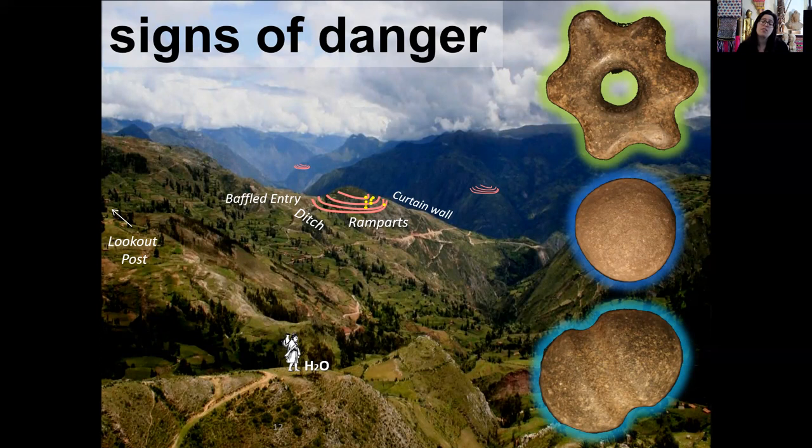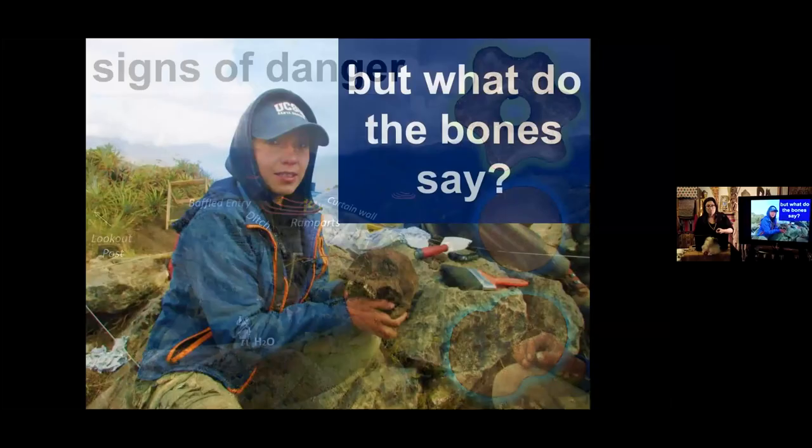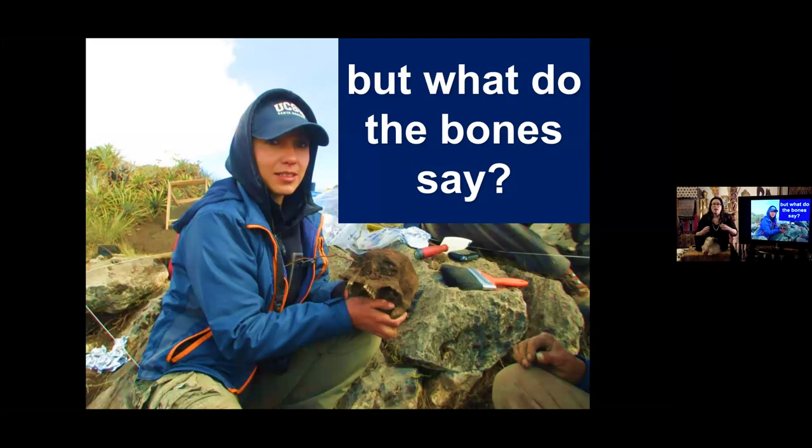We see people move from wide valleys up to mountain peaks — up to hill forts constructed with ramparts, ditches, curtain walls, and circular walls. There are weapons caches. These sites are aimed at defense. There are no water sources at these sites; people had to leave the confines of the hill forts to get basic resources, and while outside the walls they were targeted for violence. But as a bioarchaeologist, we want to interrogate those clues from history and archaeology and ask: what do the bones tell us?